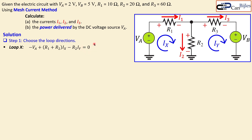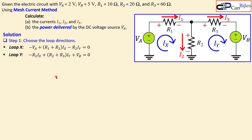For loop Y in a similar form, starting here and going clockwise, R2 and R3 carry the IY current together. You also encounter the plus of VB first, so you have plus VB. The IX current now fights back for this loop direction, giving minus R2 times IX. So the loop Y equation is: minus R2 times IX, plus (R2 + R3) times IY, plus VB, equals zero.